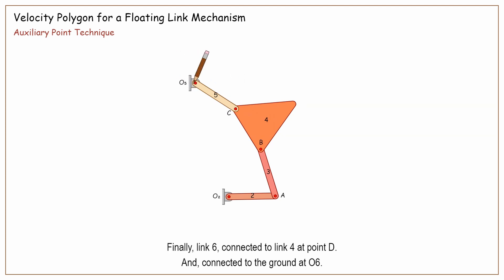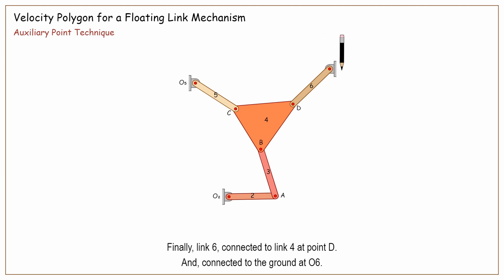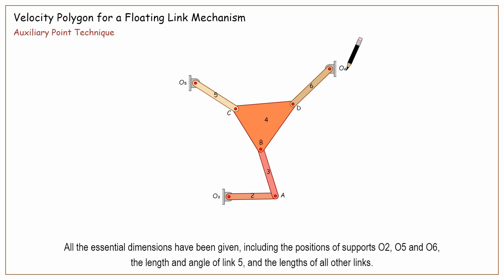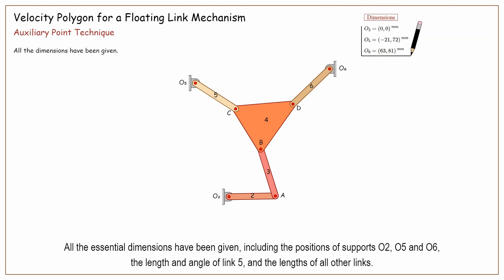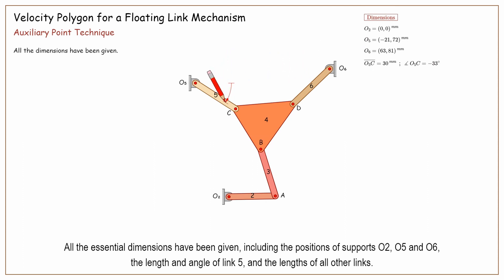Finally, link 6 is connected to link 4 at point D, and connected to the ground at 0.6. All the essential dimensions have been given, including the positions of supports 0.2, 0.5, and 0.6, the length and angle of link 5, and the lengths of all other links.